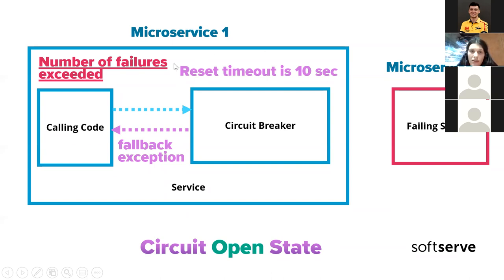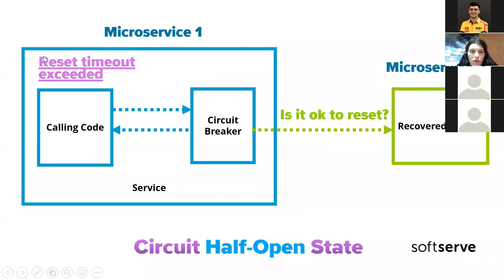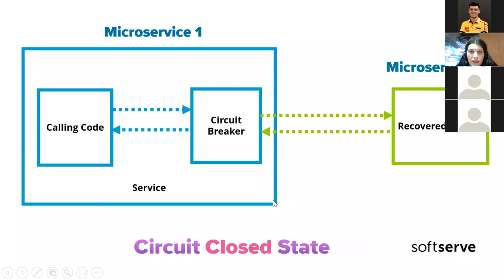When in open state, we have a reset timeout - for example, after 10 seconds the circuit breaker will try to check if the microservice has recovered. This is called the half-open state. If the system has recovered, we go back to the closed state and everything works normally.